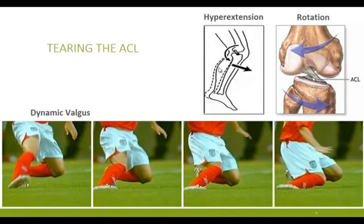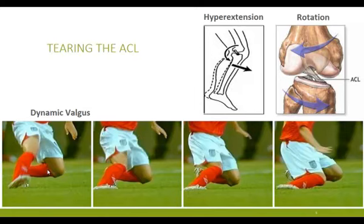Another movement known to load the ACL is frontal plane knee movement, which is involved in dynamic valgus. As seen in this series of images, a soccer player doing a cutting and decelerating movement shows the knee buckling inward, moving closer to the center line of the body while the foot moves away. This is called dynamic knee valgus and is thought to be involved in ACL injuries.